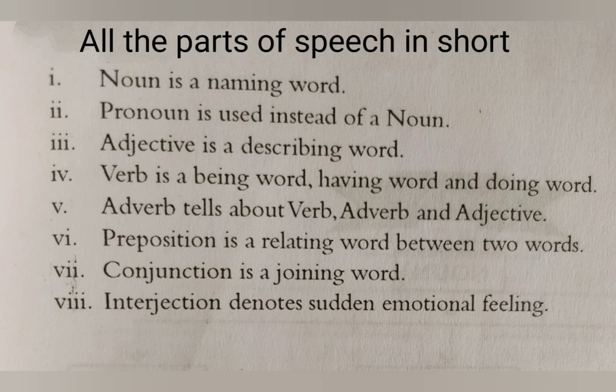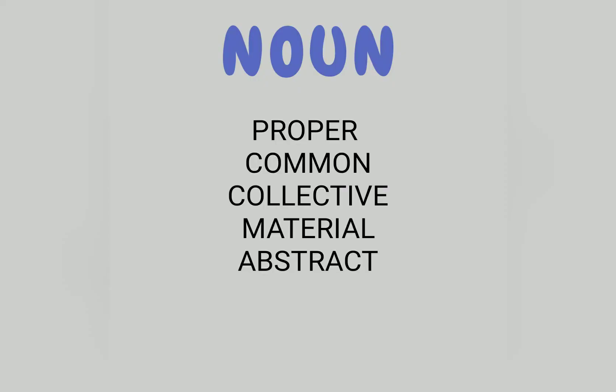Now we come to our main topic — noun. There are five kinds of nouns: proper, common, collective, material, and abstract. Today we are going to learn about proper noun and common noun.